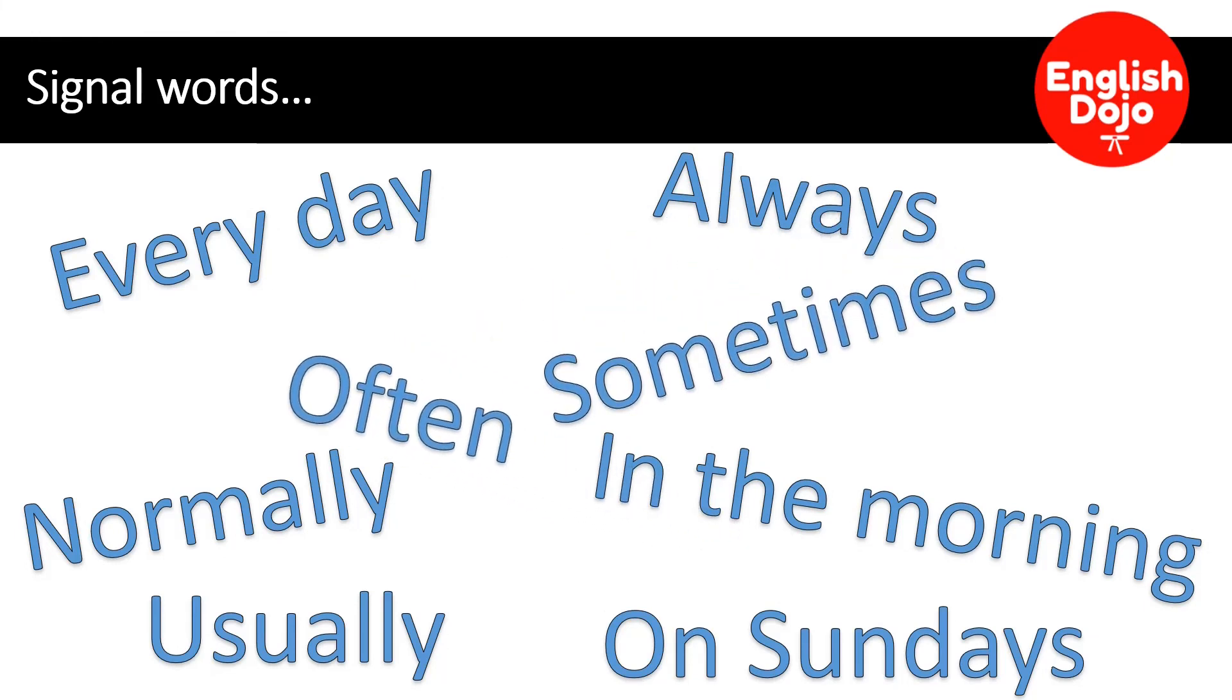Signal words son palabras relacionadas con el tema. Palabras que vamos a encontrar muy a menudo en la utilización del presente simple. Por ejemplo, every day (todos los días), always (siempre), often (seguido), sometimes (a veces), normally (normalmente), in the morning (en la mañana o en la tarde o en la noche), usually (usualmente), on Sundays (los domingos), on Mondays (los lunes), etcétera. Son palabras que te indican que estamos usando el presente simple.